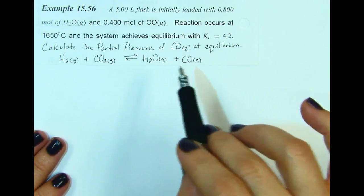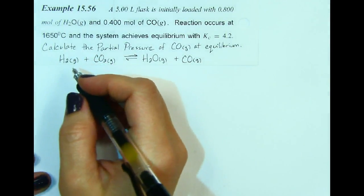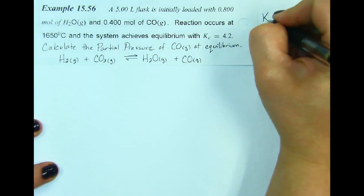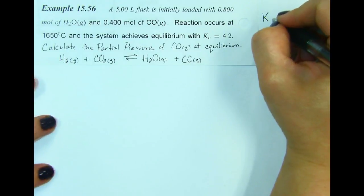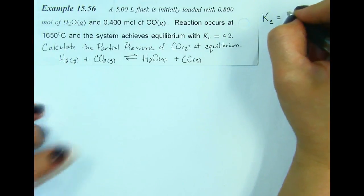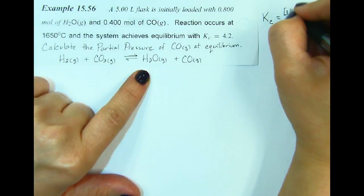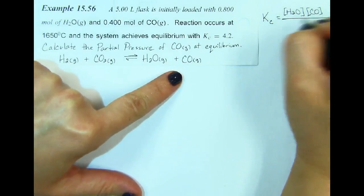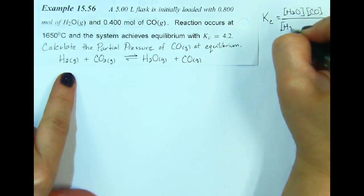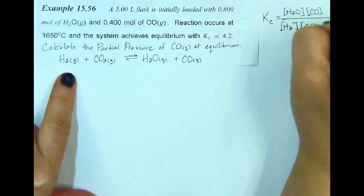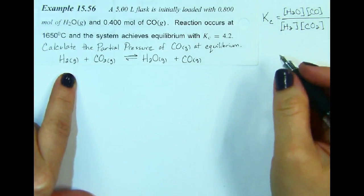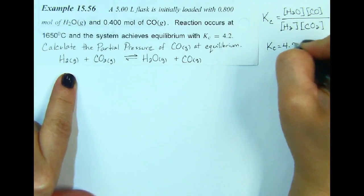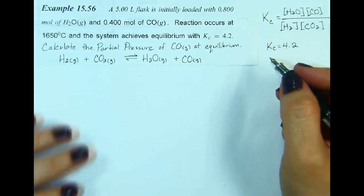Here's our equation and we can write our law of mass action for this. Kc equals the concentration of water times the concentration of carbon monoxide, all over the concentration of hydrogen times the concentration of carbon dioxide. We are also told that Kc is equal to 4.2.